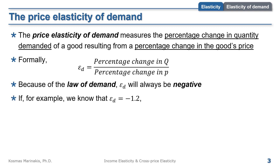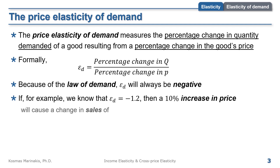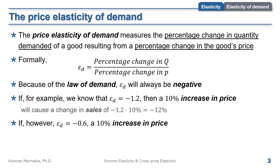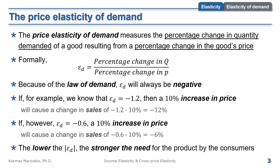For example, if elasticity of demand equals minus 1.2, then a 10% increase in price will cause a change in sales of minus 1.2 times 10%, which equals minus 12%. If the elasticity of demand is minus 0.6, a 10% increase in price causes a change in sales of minus 6%. In general, the lower the absolute value of the elasticity of demand, the stronger the need for the product by consumers.